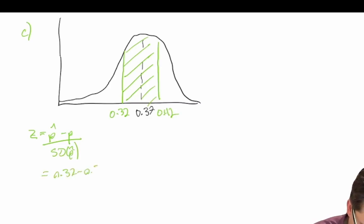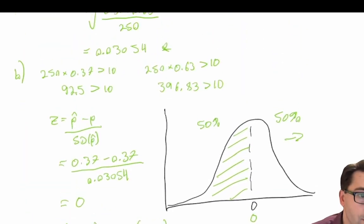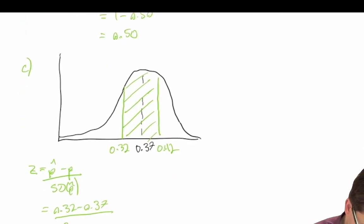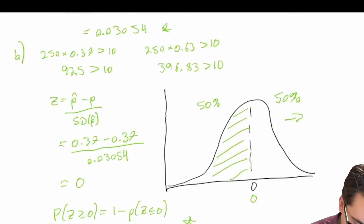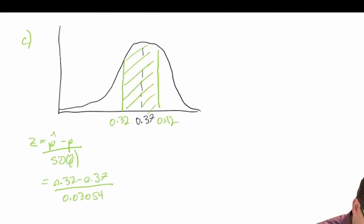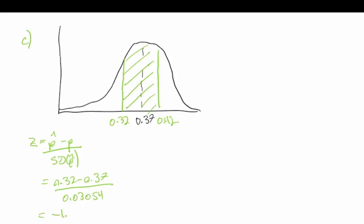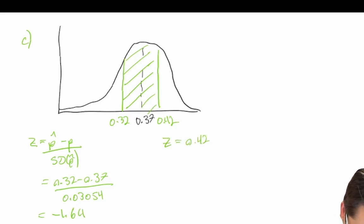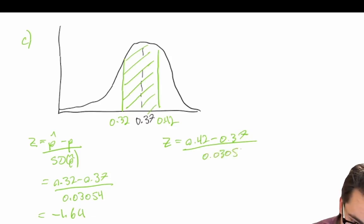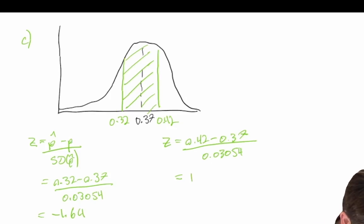Computing 0.32 minus 0.37 divided by 0.0305 gives a z-score of negative 1.64. For the upper bound: z equals 0.42 minus 0.37 divided by 0.0305, which gives a z-score of positive 1.64.